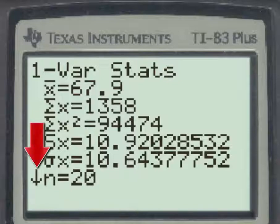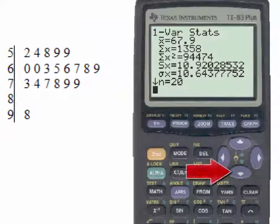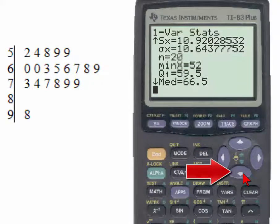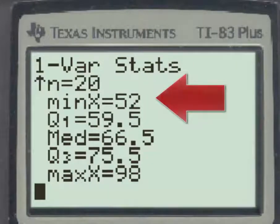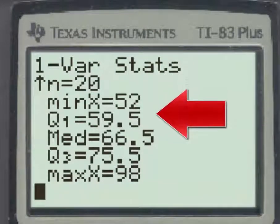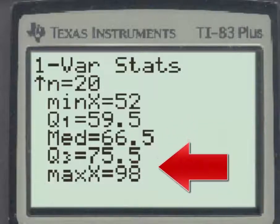This down arrow tells us that if we use the blue down arrow on the calculator, we have more information available to us, and as you go to the bottom, you see that the five-number summary, which are the minimum, Q1, the median, Q3, and the maximum, are given.